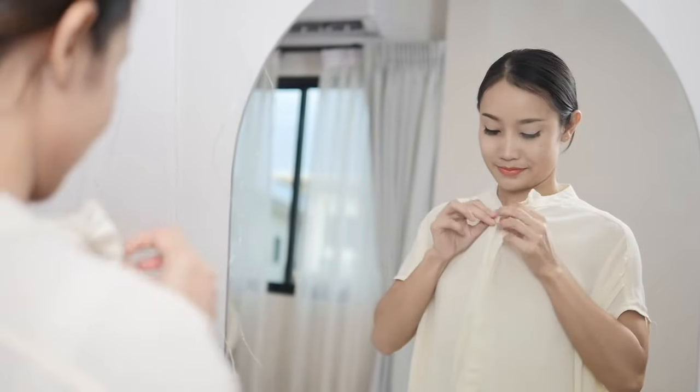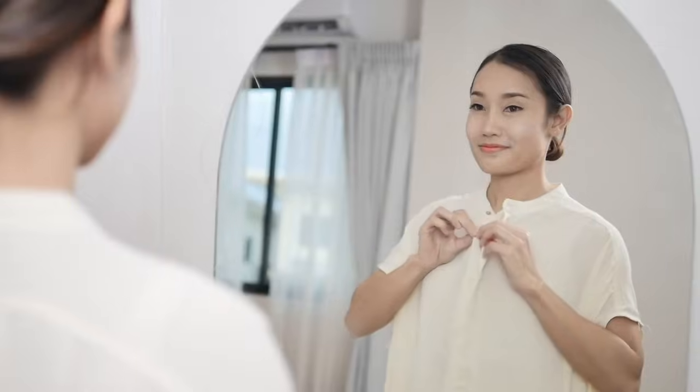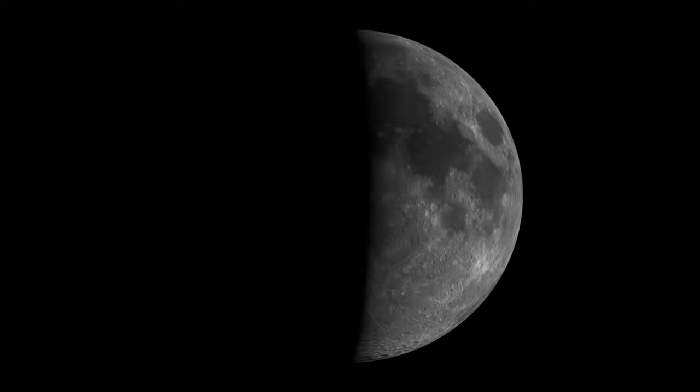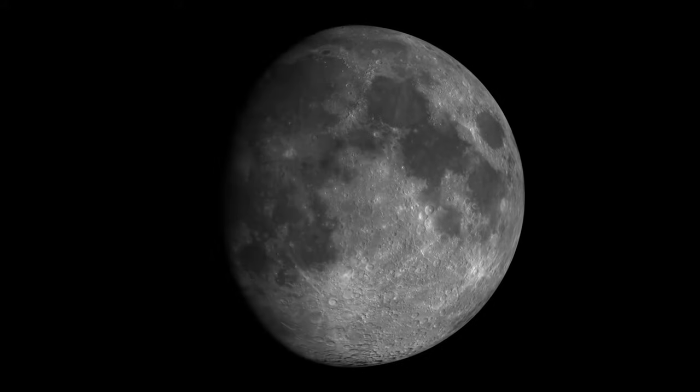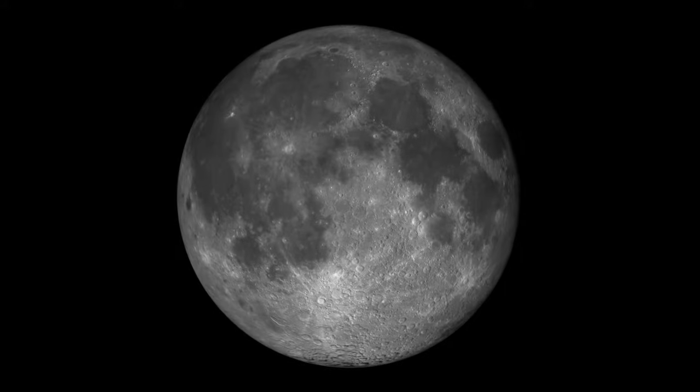Light reflection is how we're able to see ourselves when we look in a mirror. It's also why the moon seems to glow at night. Light from the sun is reflecting or bouncing off the moon and to our eyes.